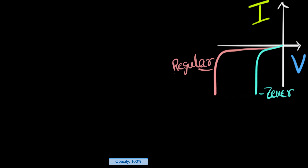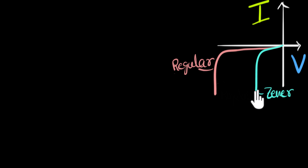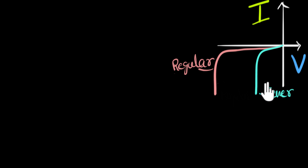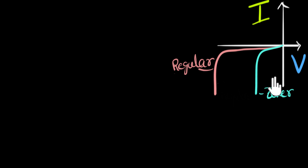One way to do this is by using a Zener diode. In a previous video, we spoke about the Zener diode — a very heavily doped diode which, in reverse bias, can break down at much lower voltages than a conventional diode. The more the doping impurities, the lower its breakdown voltage. This mechanism is called the Zener mechanism. So if you need more clarity, go back and watch that video. In short, Zener diodes can break down at very low voltages under reverse bias.